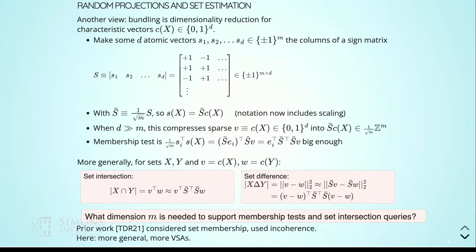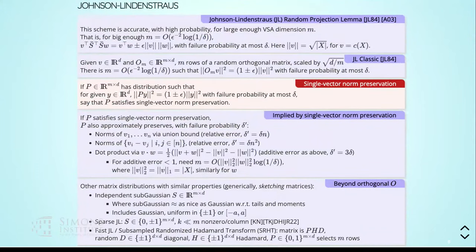The basic question of analysis: what dimension is sufficiently large to do membership tests and set intersection queries with guaranteed accuracy and high probability? Our work is a follow-up to work by Thomas, Dasgupta, and Rosen, who looked at set membership and used incoherence terminology also used in sketching and JL. Our contribution extends their work to set intersection and tries to be comprehensive about the analysis of different VSAs.